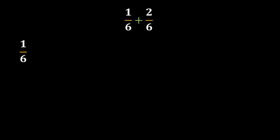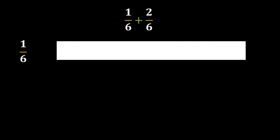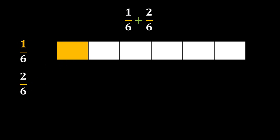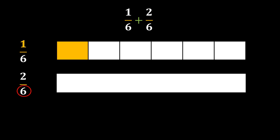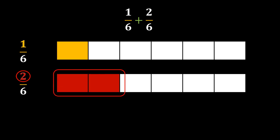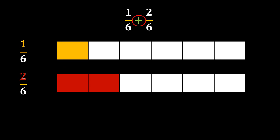Starting with the first fraction, which is 1 sixth, we take a fraction bar so that we can visualize this as a bar. Since the denominator of this fraction is 6, we divide this bar into 6 equal pieces. The numerator of this fraction was 1, so we shade 1 part out of these 6 pieces. Next, for 2 sixths, we take a fraction bar of the same size. The denominator is again 6, so we make 6 equal pieces of this bar, and since the numerator is 2, we shade 2 pieces out of the total 6. This is all we have in these two fractions and now we want to add them.